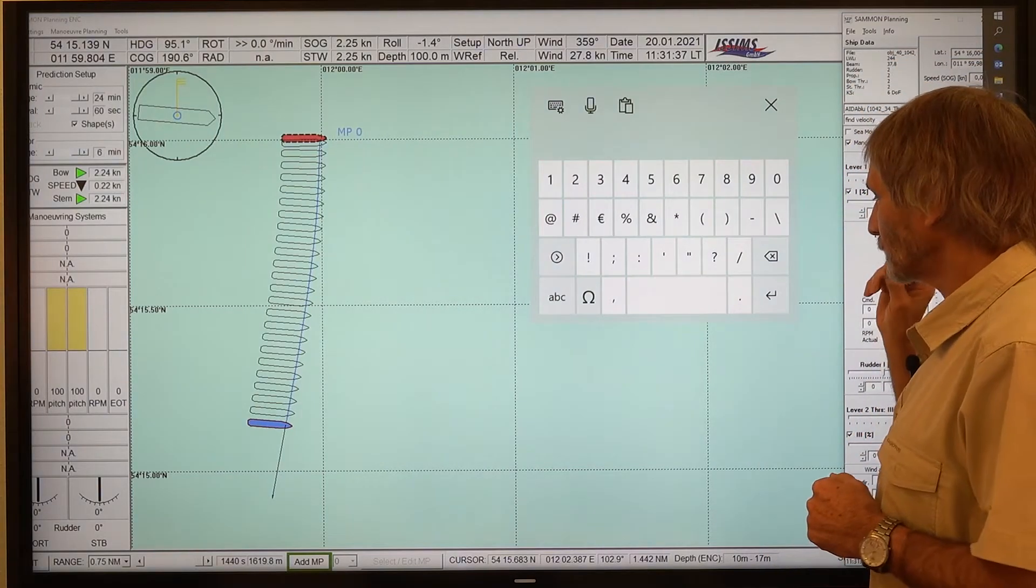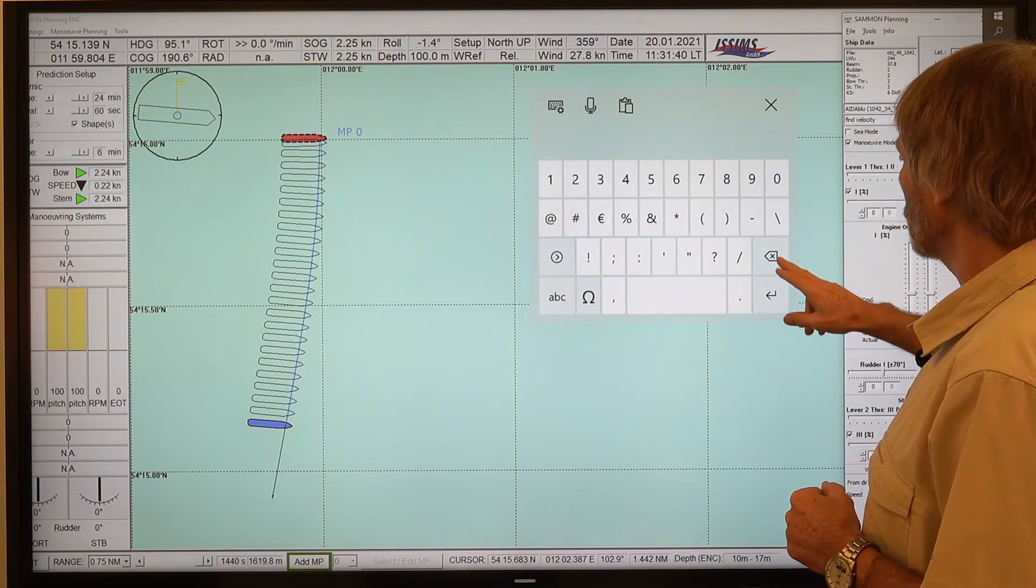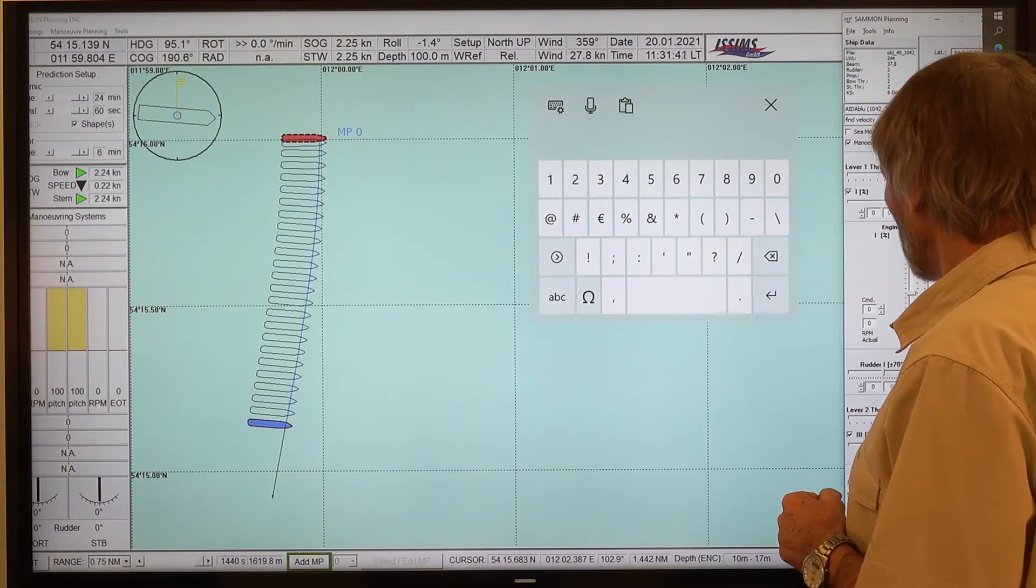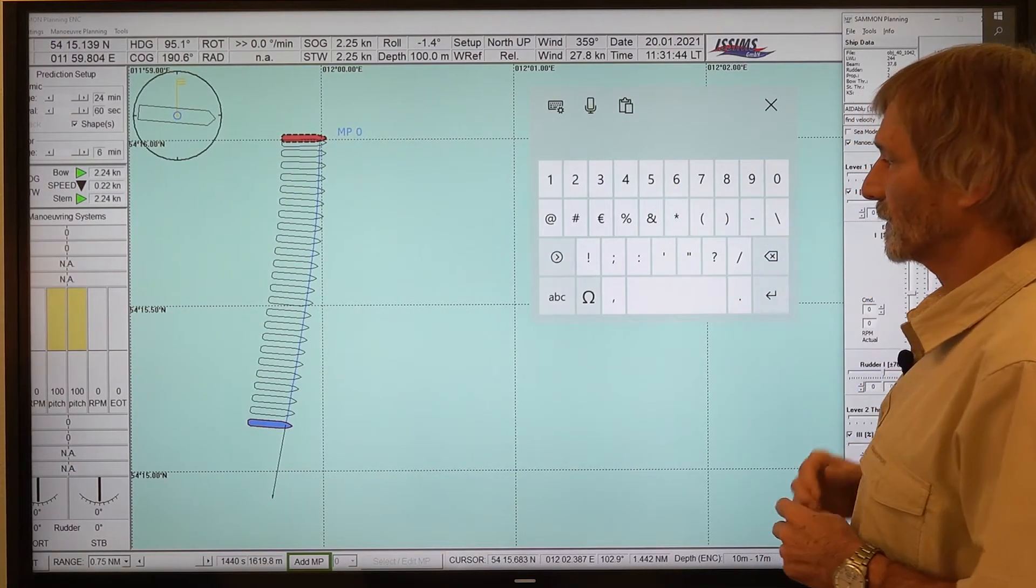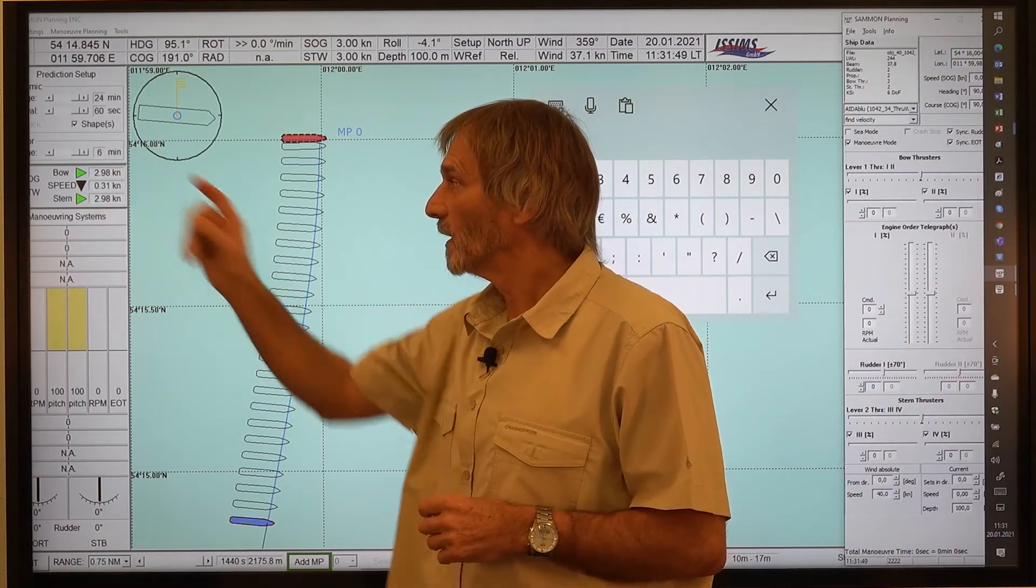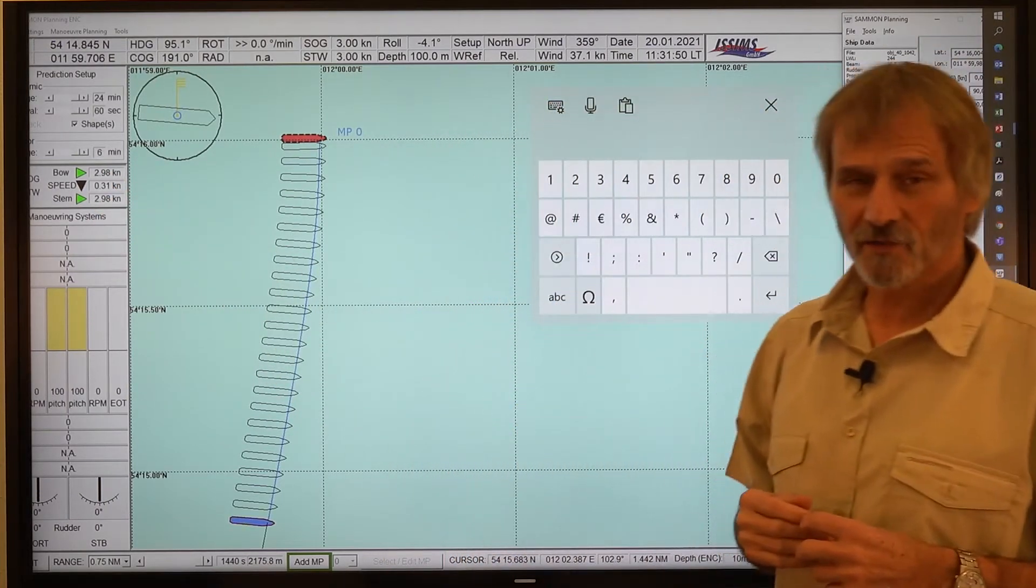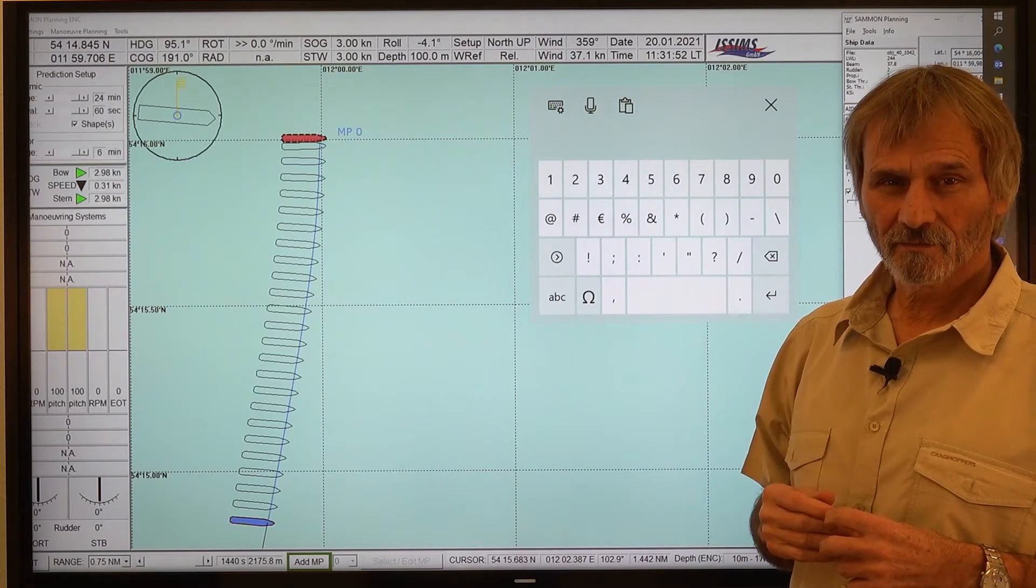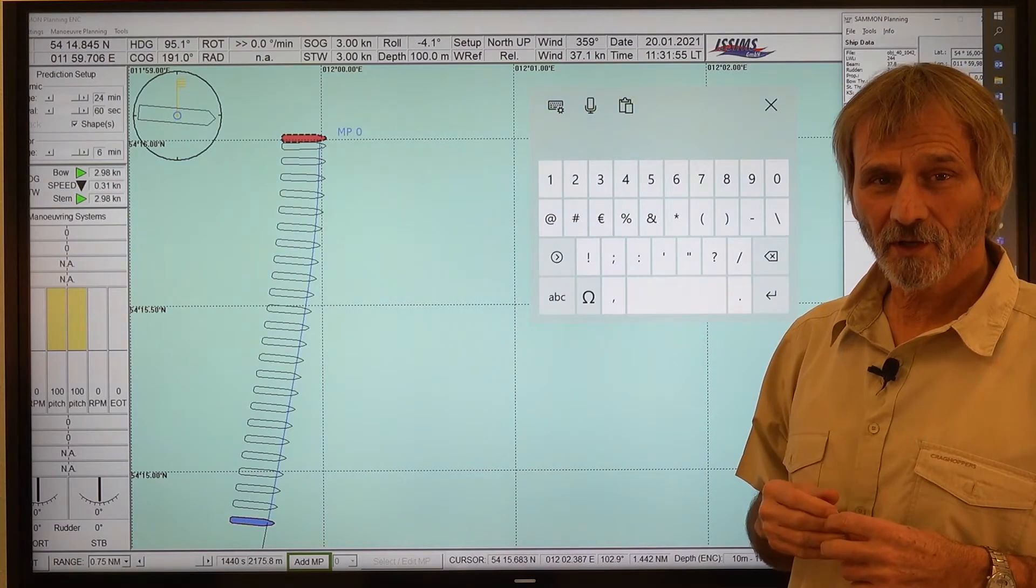And the final part will be maybe here, we go to 40 knots. And this drifting speed is then about 3 knots. So this is double of 20 knots.